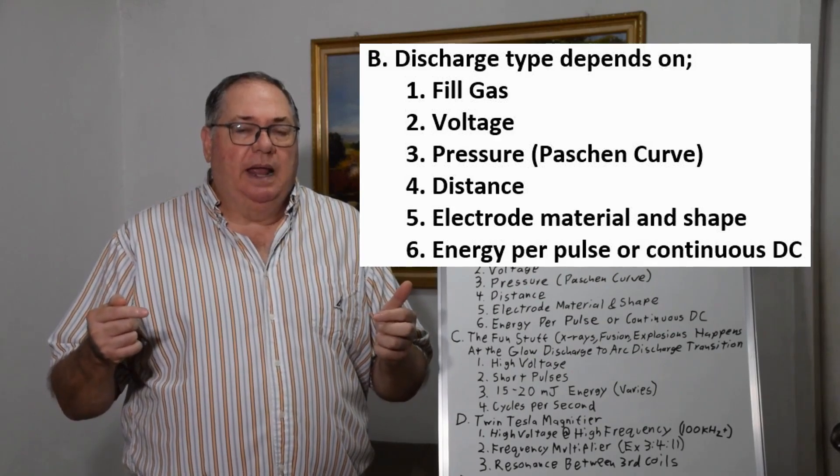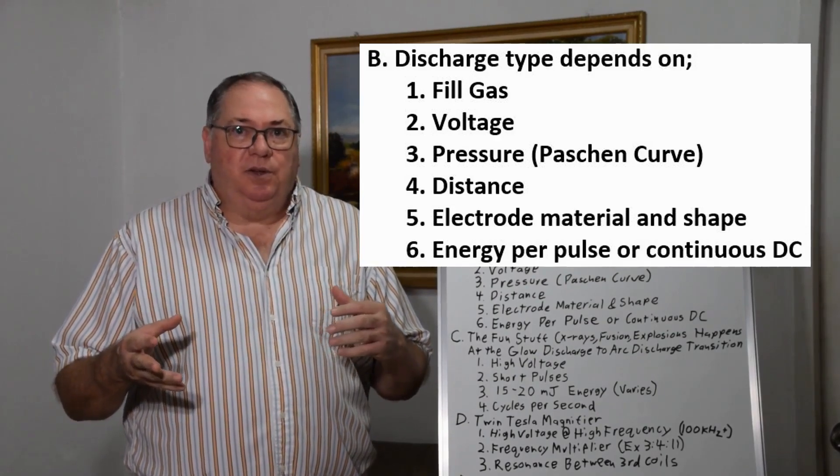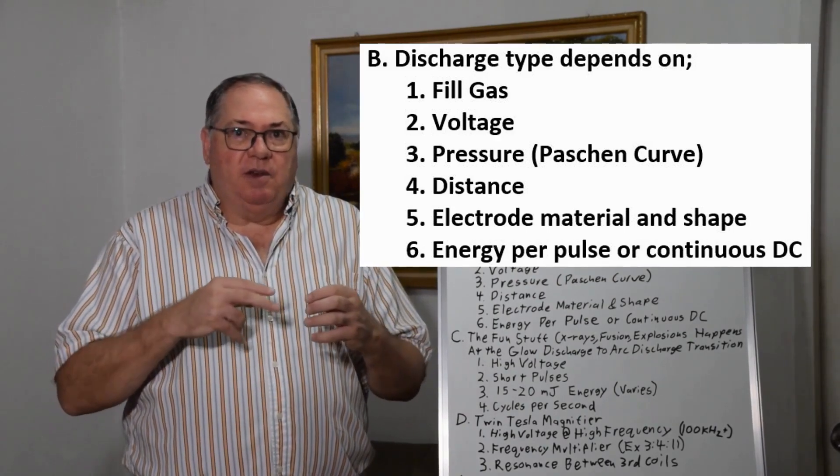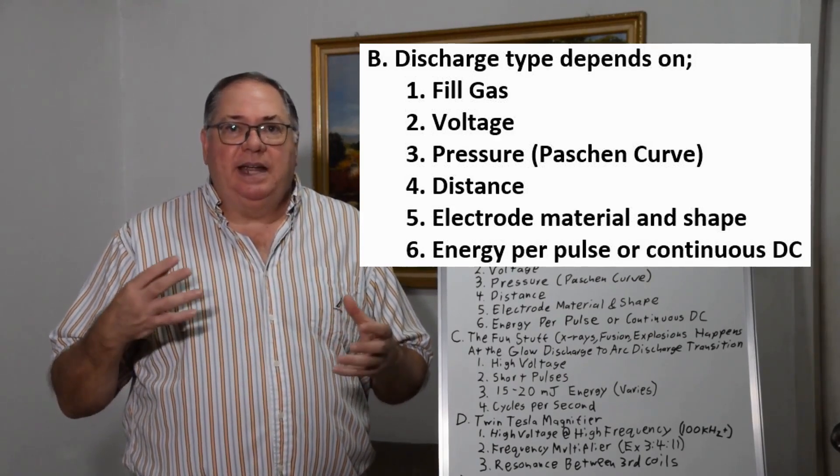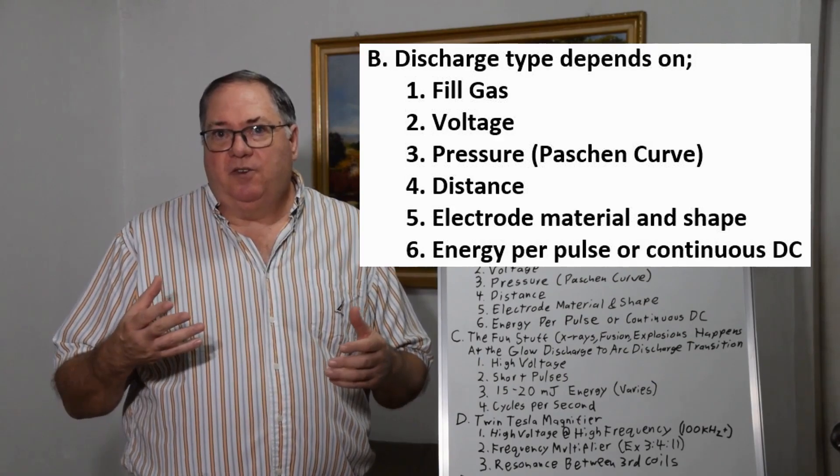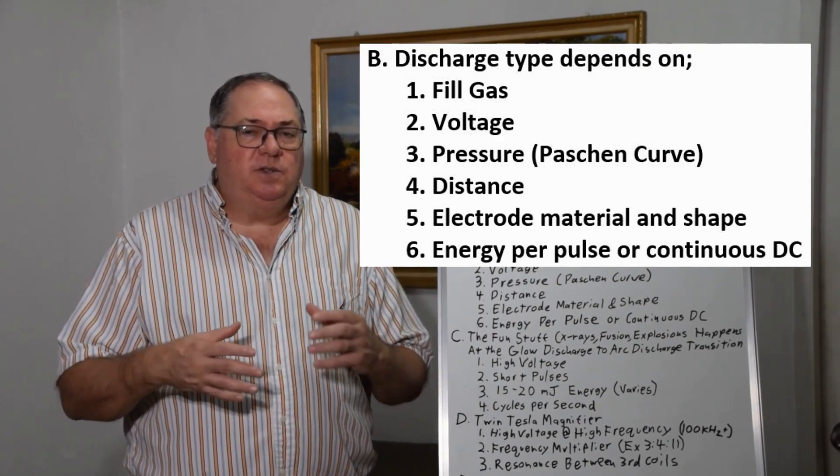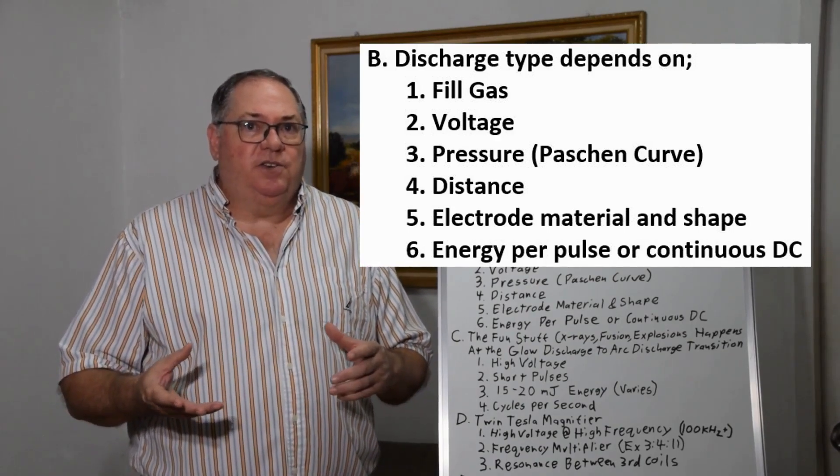The problem with a vacuum arc tube is that you can round off your electrodes as the gas hits them. To maintain sharpness you might use a trick like a hollow cathode tube. Those are being experimented with in vacuum arc discharge.